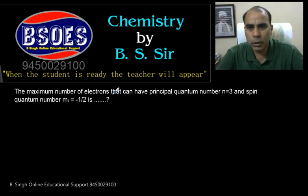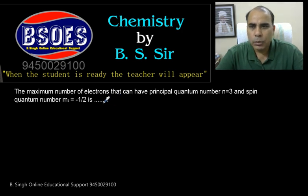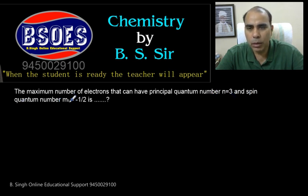The previous year 2011 question is: the maximum number of electrons that can have the principal quantum number n is equal to 3 and spin quantum number ms is equal to minus 1/2.